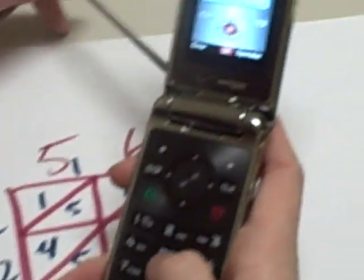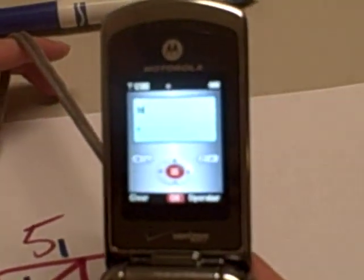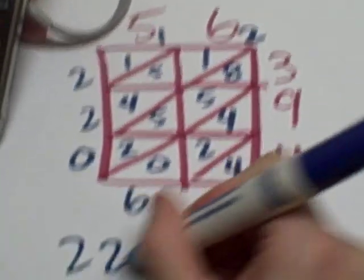And then we check 56 times 394 equals 22064, which is what we have.